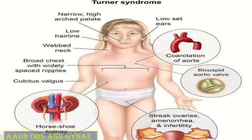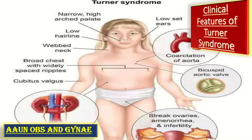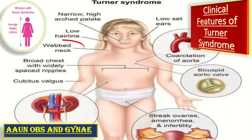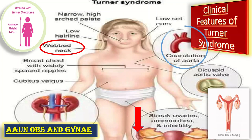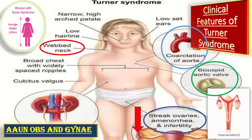Let us talk about the clinical features of Turner syndrome. These include: short stature, webbed neck, ovarian hypofunction and premature ovarian failure, coarctation of the aorta, bicuspid aortic valve, and streak ovaries as an example of gonadal dysgenesis — meaning Turner syndrome is an example of gonadal dysgenesis because of streak ovaries.